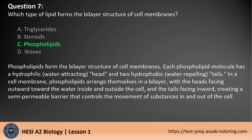The answer is C. Phospholipids form the bilayer structure of cell membranes. Each phospholipid molecule has a hydrophilic (water-attracting) head and two hydrophobic (water-repelling) tails. In a cell membrane, phospholipids arrange themselves in a bilayer, with the heads facing outward toward the water inside and outside the cell, and the tails facing inward, creating a semi-permeable barrier that controls the movement of substances in and out of the cell.